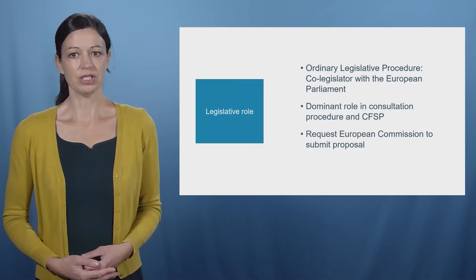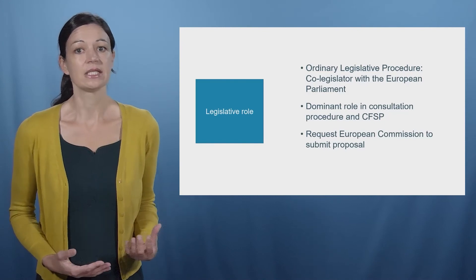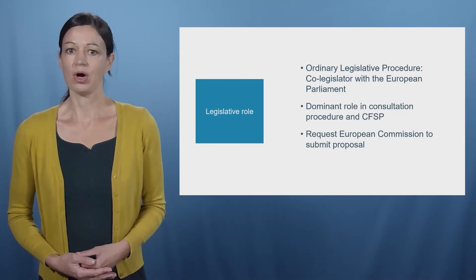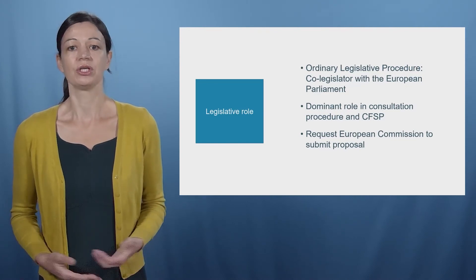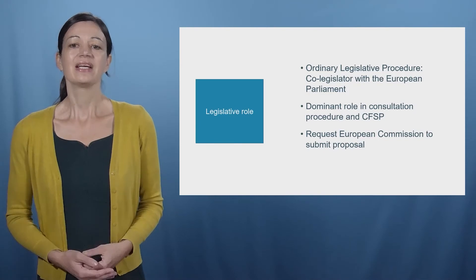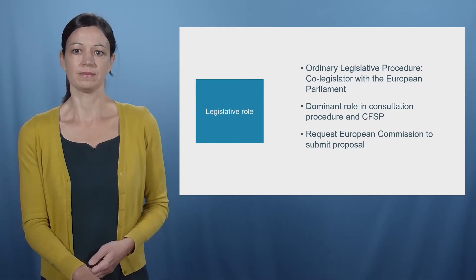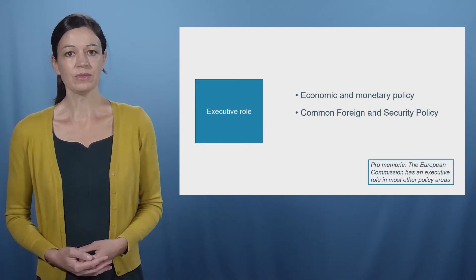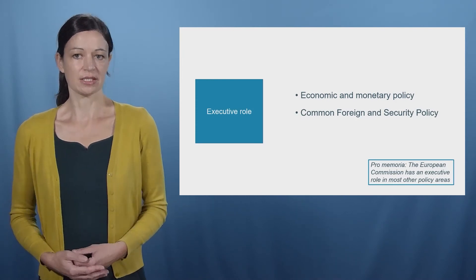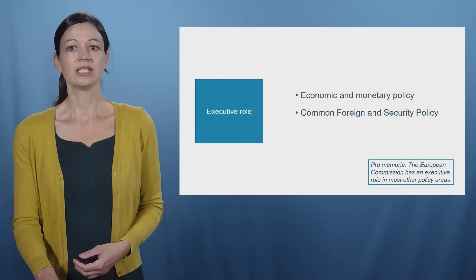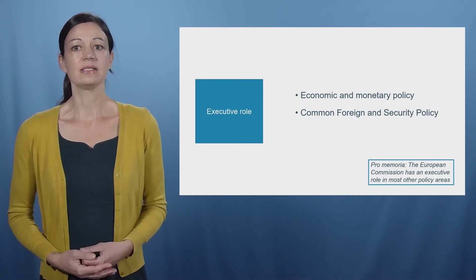Although the European Commission has the prerogative to propose legislation, the Council of the European Union can request the Commission to make a study and to submit a proposal pertaining to a defined policy issue. While the Commission is free to decide whether or not to actually submit a proposal, the Council's request can put significant pressure on the agenda-setting and the policy formulation phase. Next to its legislative role, the Council also has an executive role. While generally the European Commission executes EU policies, in areas such as the European Monetary Union or the common foreign and security policy, the Council is the main executive power.